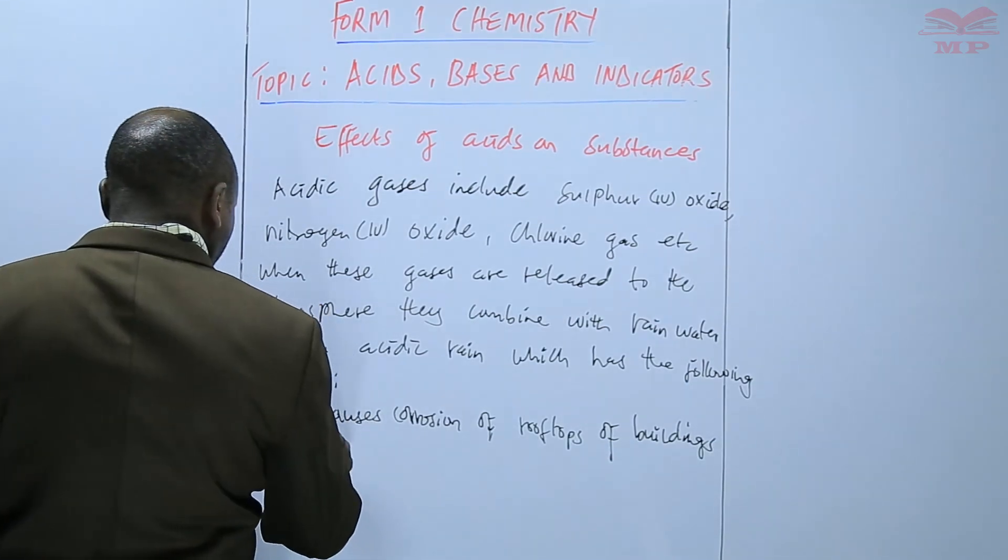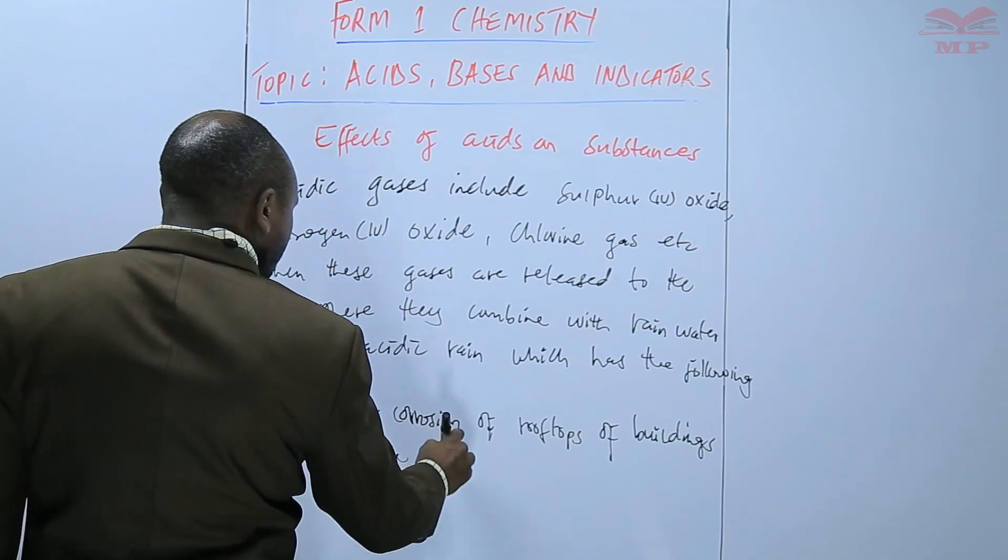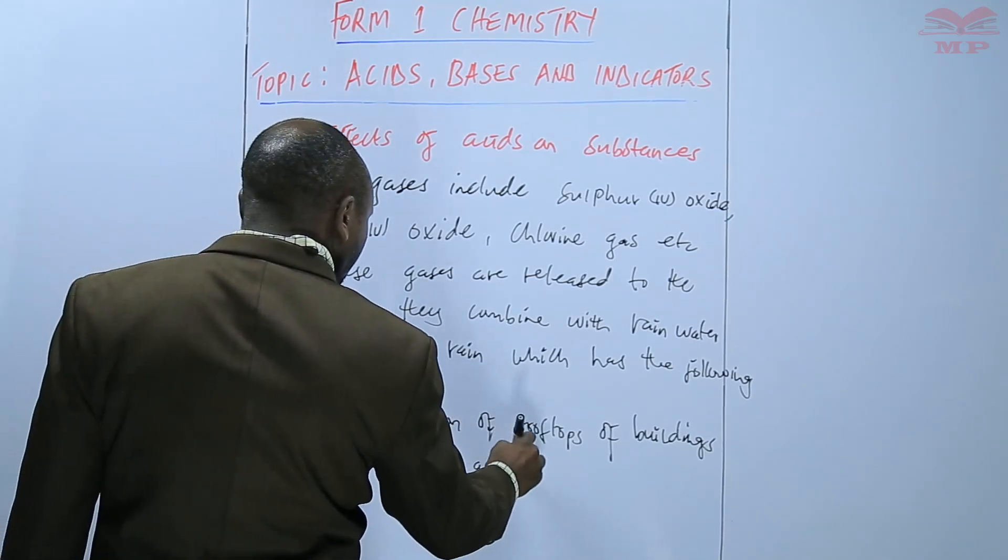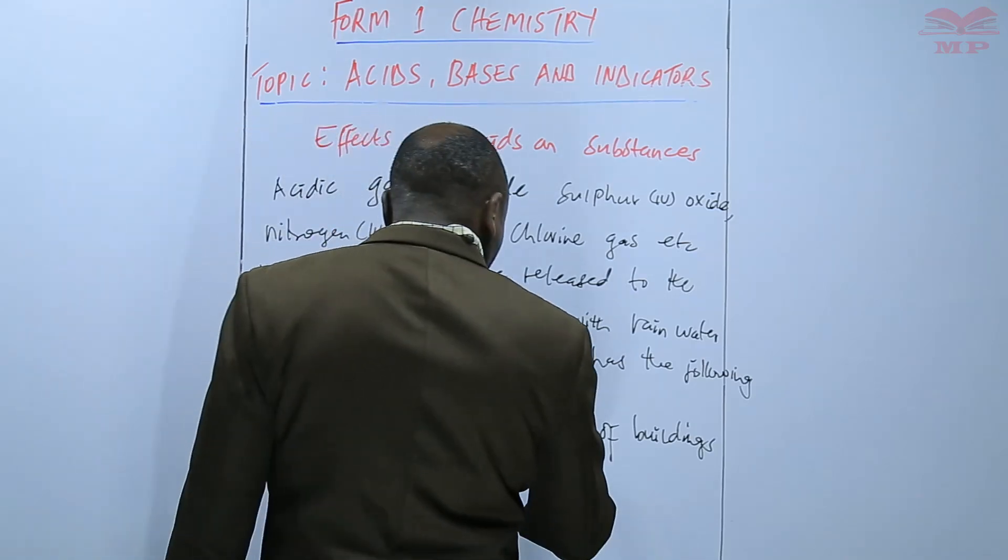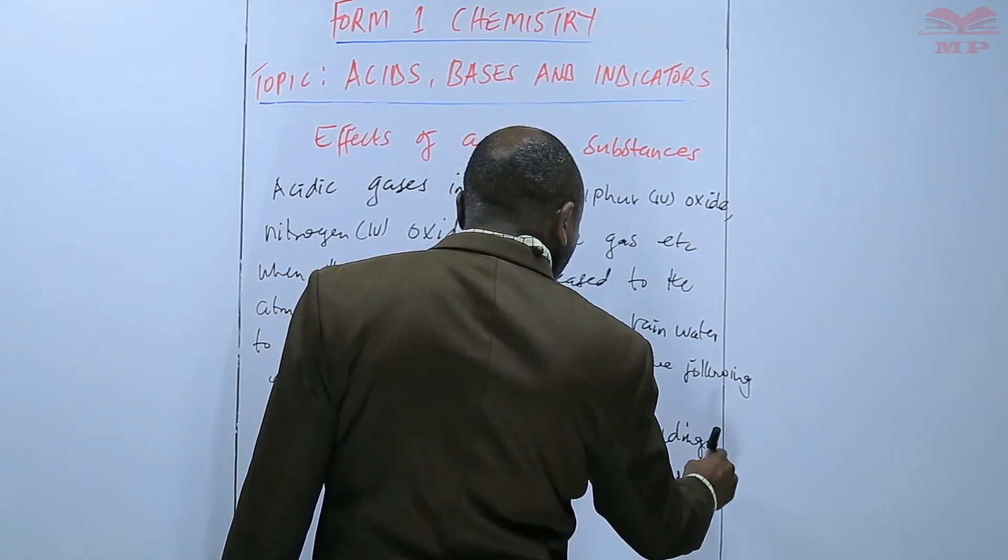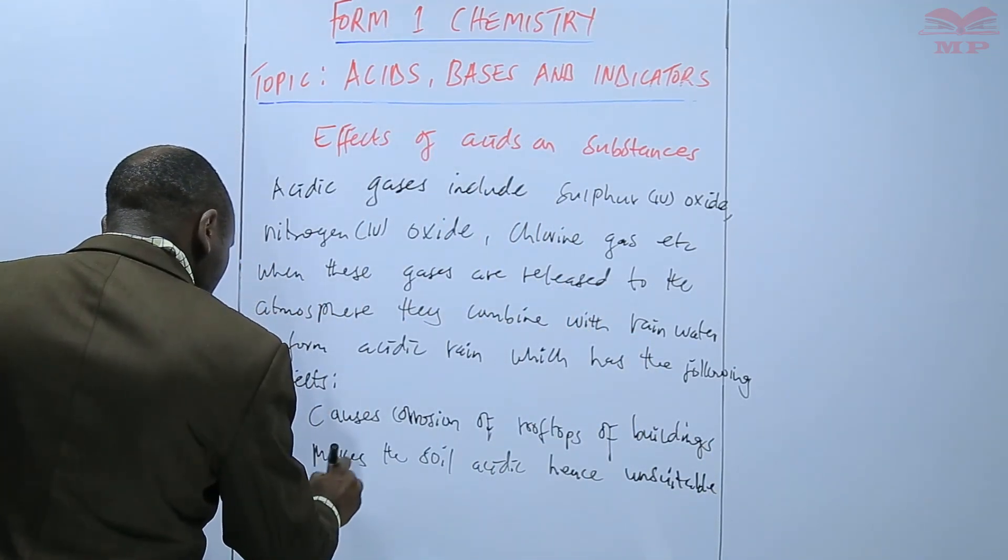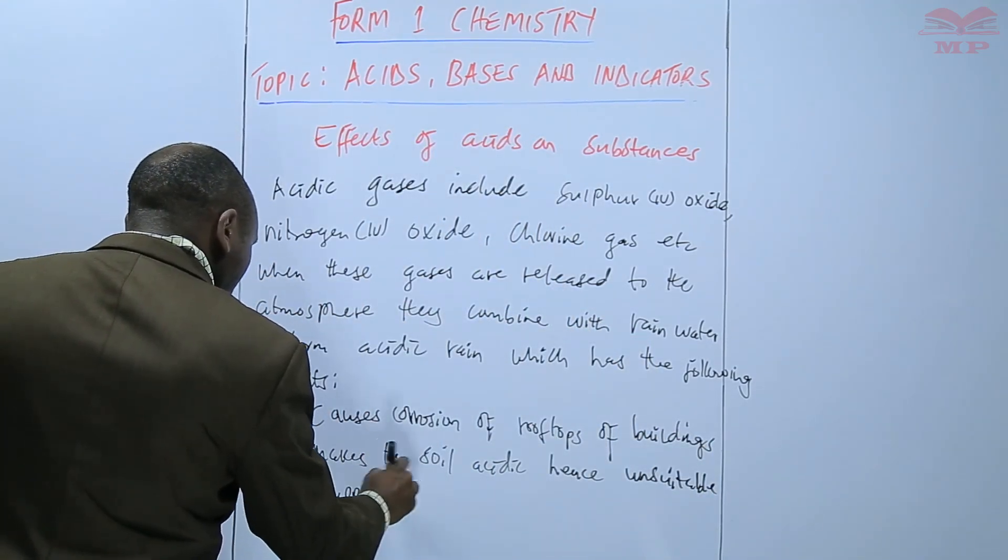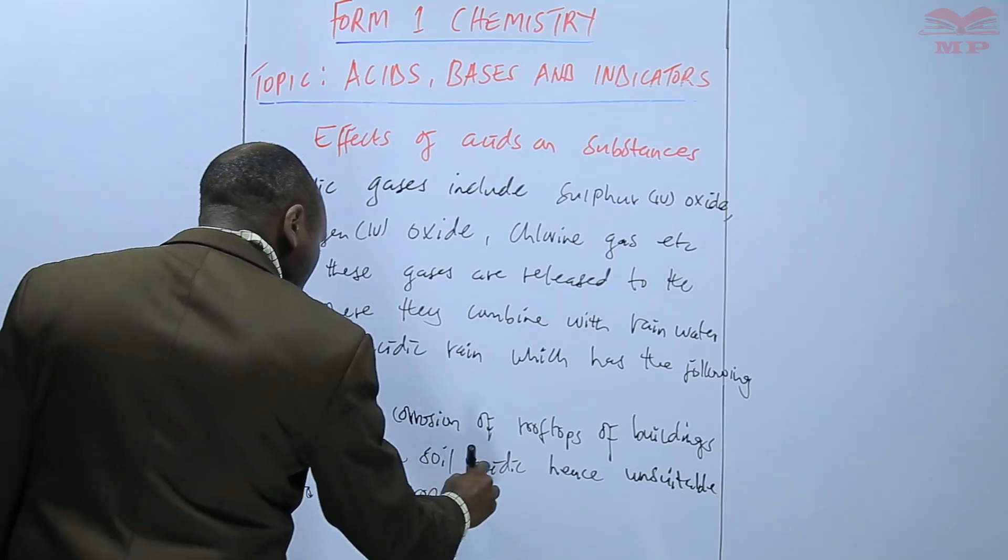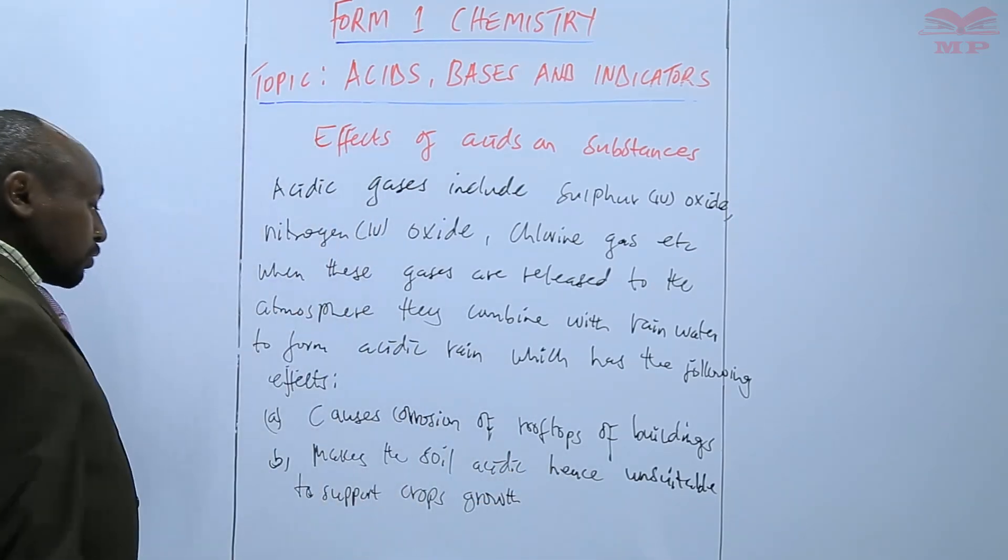Acidic rain makes the soil acidic. Hence, it becomes unsuitable to support crops growth. So the crops are not able to do well.